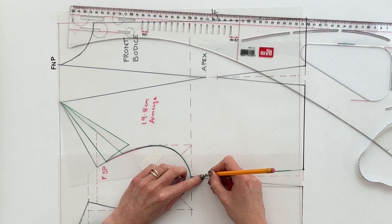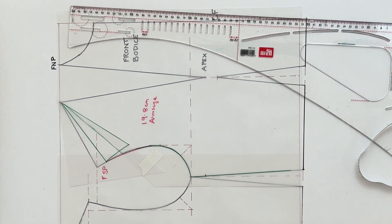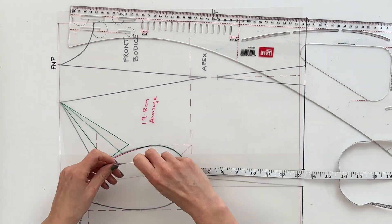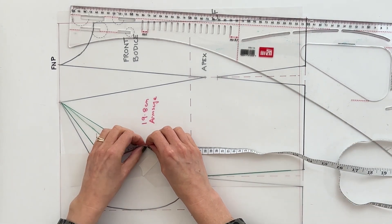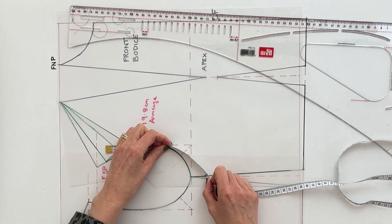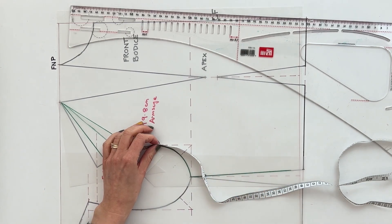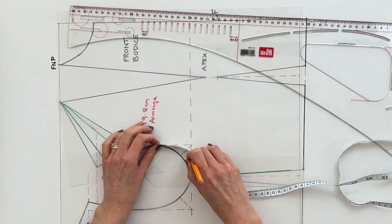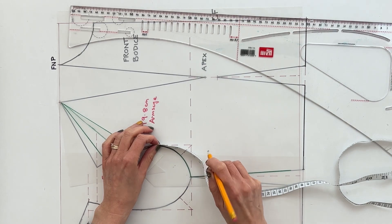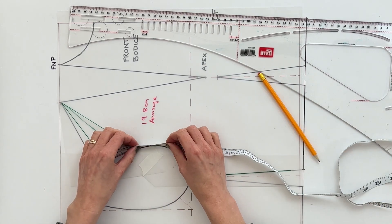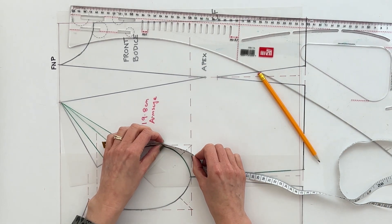19.8 would take me down to about there. Using a pencil you just want to mark on where that is and mark on a few help lines. Just dot them on to draw an approximate armscye depth. So my tape measure is giving me a bit of a gentle curve.